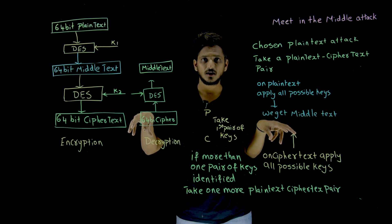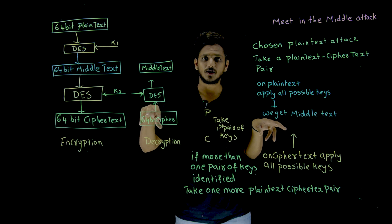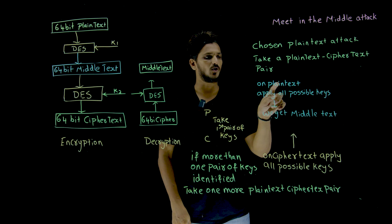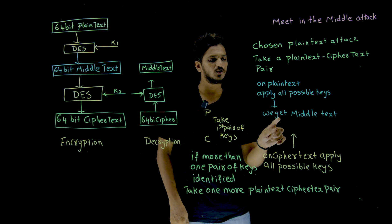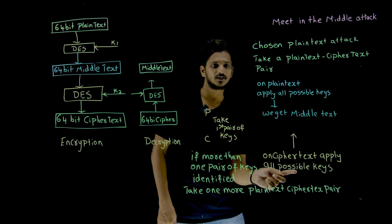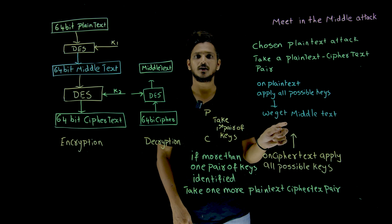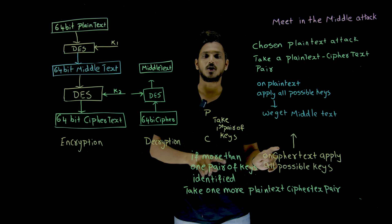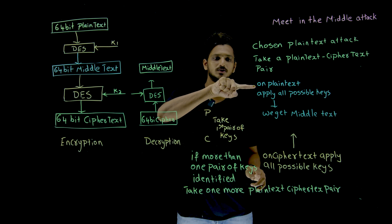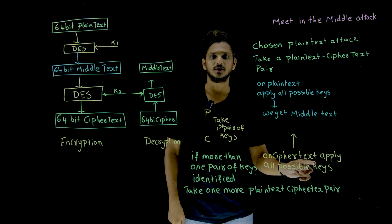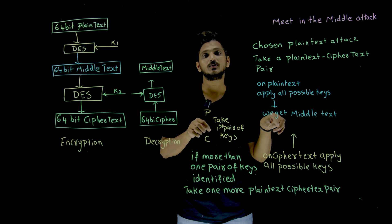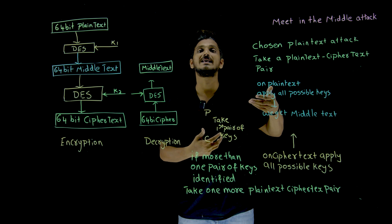If you do both operations in parallel, from both sides you get the middle text — from the plaintext side and from the ciphertext side — each with 2 power 56 possibilities. Since you are doing them in parallel, the total is 2 times 2 power 56, which is 2 power 57.